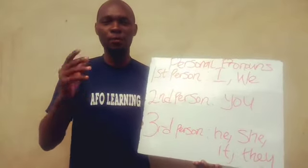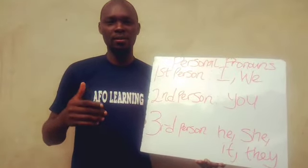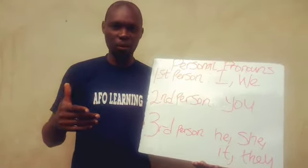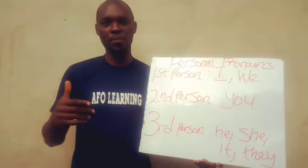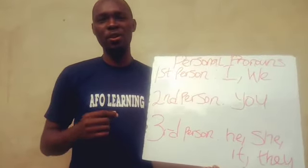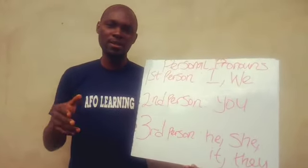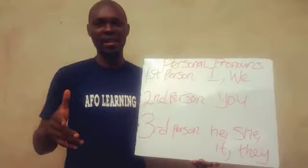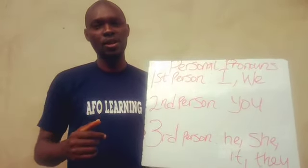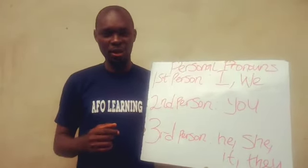The first person talks about the person talking. The second person refers to the person you're talking to, and the third person refers to the person or the thing that is being talked about. So let's quickly look at each of them.